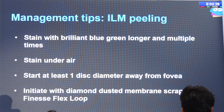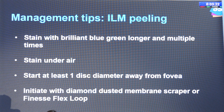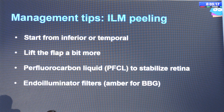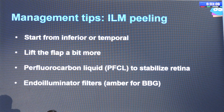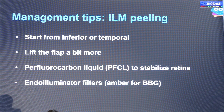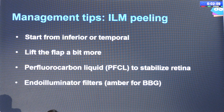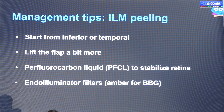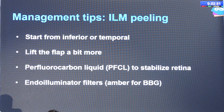To prevent injury, we should start one disc diameter away from the fovea. To initiate the ILM peel, we can use DDMS or a bent needle loop. If you start from superiorly, the instruments themselves can cast a shadow and reduce visibility. Because these are long eyes, you will have to lift the flap a bit more. If there is retinal displacement, you can use PFCL as a third hand and it will help your ILM peeling. Some illuminator filters are available for better visualization, but they might also reduce visibility.